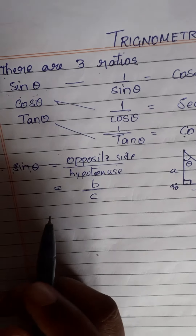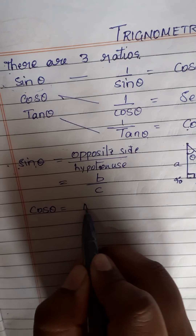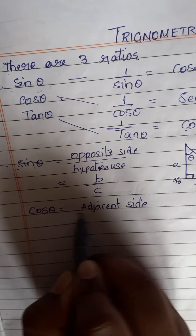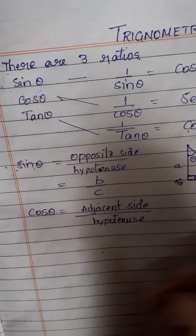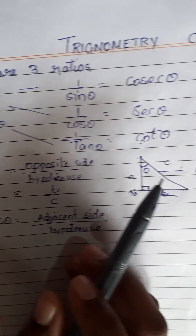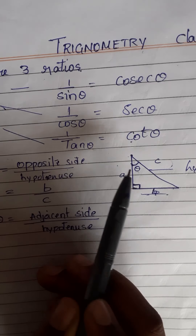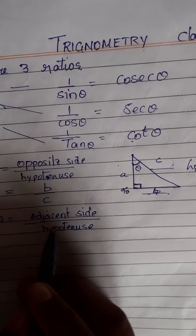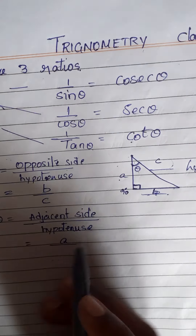Let's see cos theta. What is cos theta? Cos theta equals the adjacent side by hypotenuse. In the triangle, for the given angle theta, the adjacent side — the side next to the angle — is A. So cos theta equals A by hypotenuse, which is C.